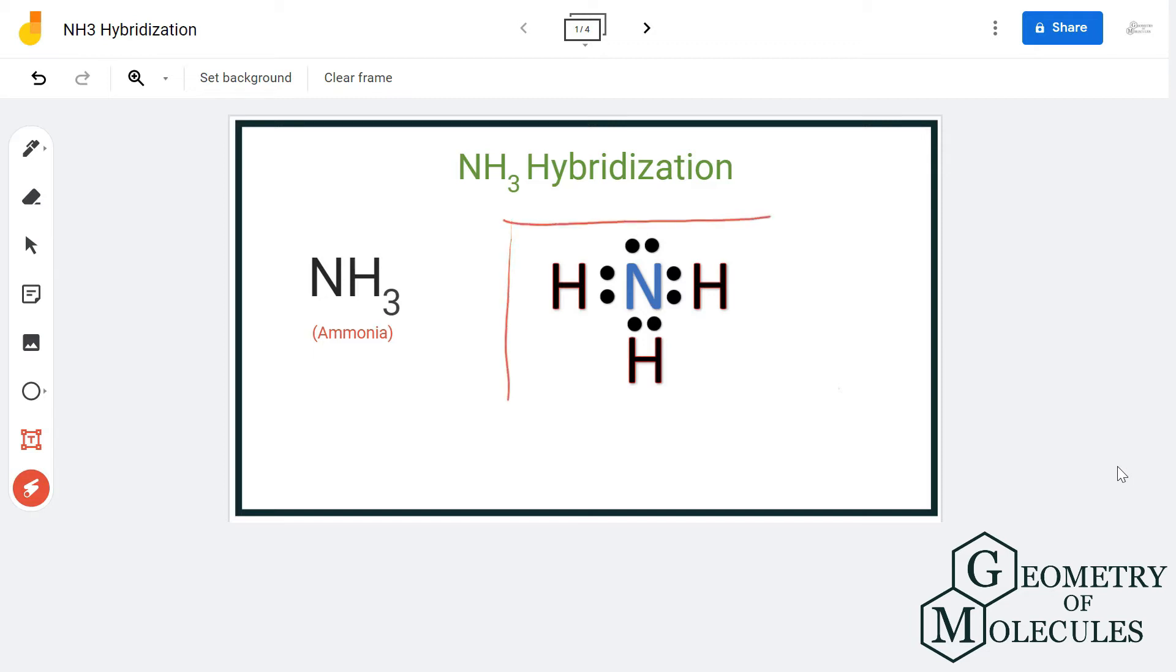When we look at the Lewis structure of NH3, the nitrogen atom is forming three bonds with three hydrogen atoms. These are single bonds, and it is also left with one pair of non-bonding electrons, which is also known as one lone pair of electrons.